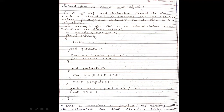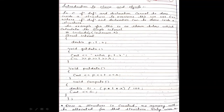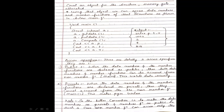Using that object, we can access the data members and member functions of that structure, as shown in the main function below. The variables — principal, time, rate — are called data members. The functions — get_data, put_data, compute — are called member functions. To access them, we need to create an object of the 'interest' structure.